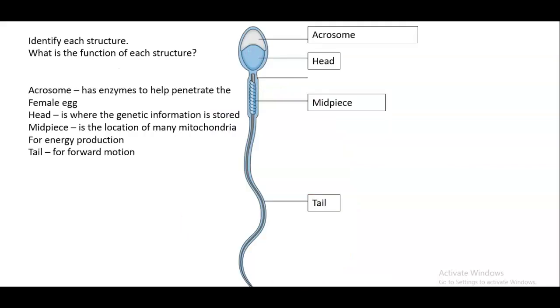Identify each structure. What is the function of each structure? So we have the acrosome, which has enzymes to help penetrate the female egg and allow for implantation within the egg. We have the head, which is the location of the genetic material. We have the mid-piece, which has many, many, many mitochondria, which is essential for energy production.